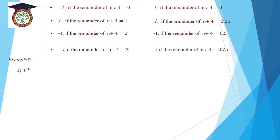For example, find the value of i^16. Since 16 is greater than 4, we divide: 16 divided by 4 equals 4 with remainder 0, so i^16 equals 1. For i^101: 101 divided by 4 equals 25.25, so the remainder is 0.25, which means i^101 equals i.